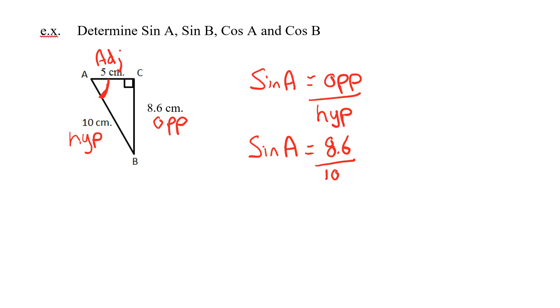So what math can I do now? Well, I can't do much with the sine of A right now. But I could do 8.6 divided by 10. So sine of A equals, go to our calculator, 8.6 divided by 10 is 0.86.